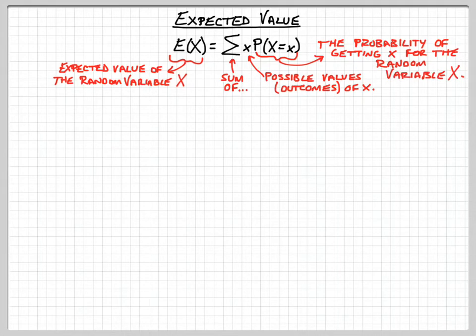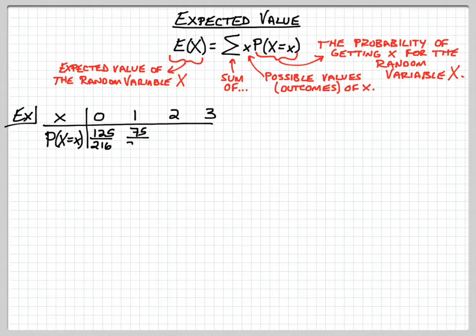In a previous example, we talked about rolling three dice and looking at the number of sixes that we get from there. So the random variable big X would be rolling the three dice, and the little x would be the possible outcomes: getting 0, 1, 2, or 3. And actually, let's look at that same idea with this next example. So we've got 0, 1, 2, 3, and our probabilities. The probability of getting 0 sixes when rolling three dice is 125 out of 216. The probability of getting one six is 75 out of 216. The probability of getting two sixes is 15 out of 216, and getting all three sixes is 1 out of 216.